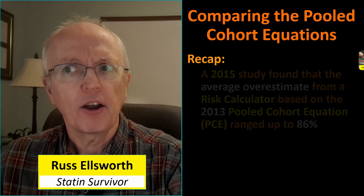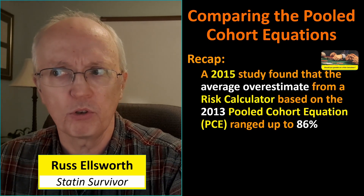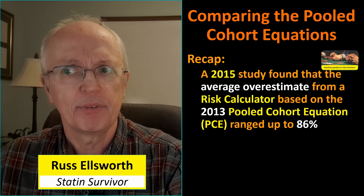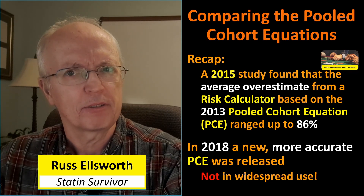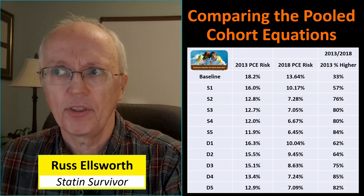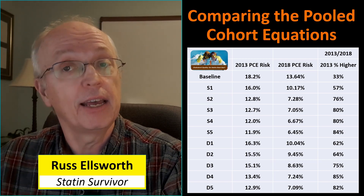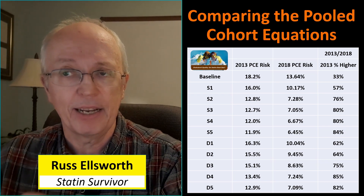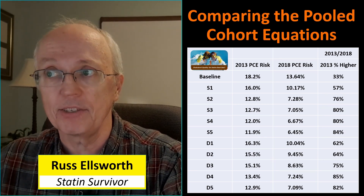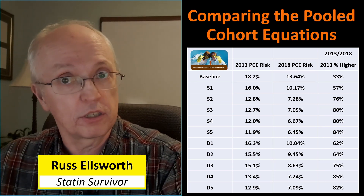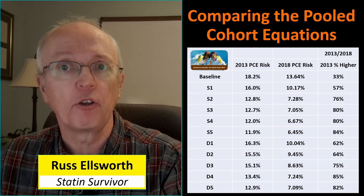To recap: in that earlier video, I talked about the 2015 study that found the average overestimate from a risk calculator based on the 2013 pooled cohort equation, or PCE, ranged up to 86%. In 2018, a new, more accurate PCE was released, but for some reason it's not in widespread use. So I compared the results using a calculator with the 2013 PCE against one with the 2018 PCE, using the 11 lipid panels from my diet versus statins video. The difference between the two equations does start to get up towards 80%, so the 2018 equation really addresses this overestimate problem found in the 2015 study.